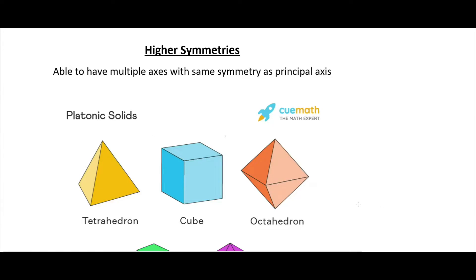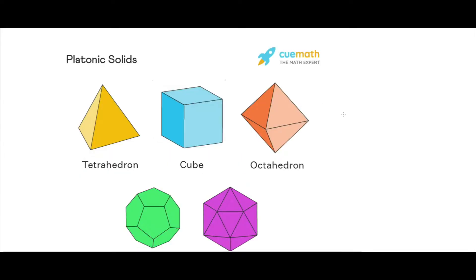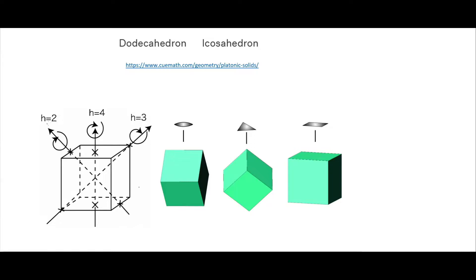In this video I'm going to be talking about the tetrahedral and octahedral point groups. These are the higher symmetries because there can be more than one principal axis — or rather there's no single principal axis because there are multiple axes with the same rotational symmetry. The cube ends up being a model shape for both the tetrahedral and the octahedral because we inscribe these shapes inside a cube.